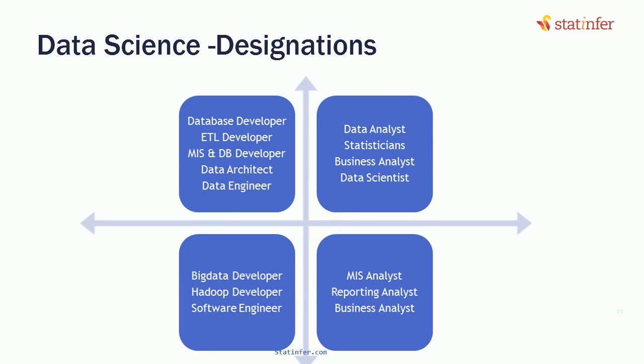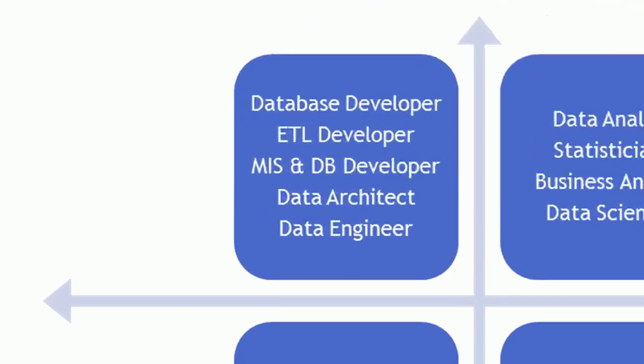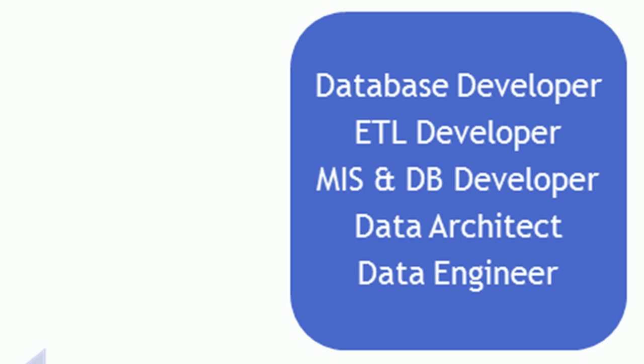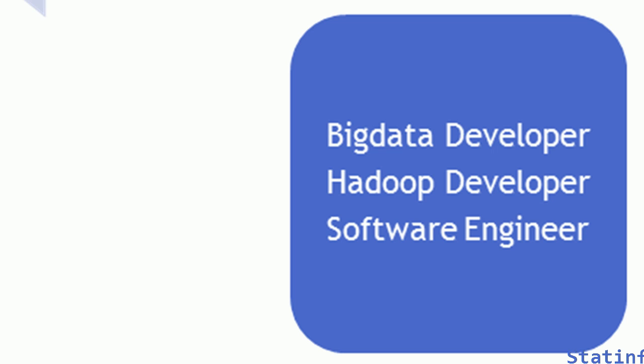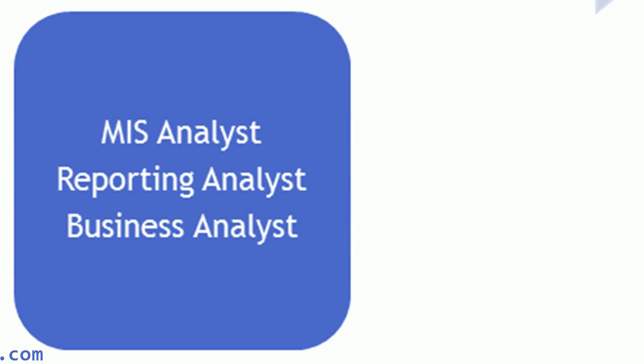Here are the designations for each of the quadrants. If you focus only on the tools from quadrant one, that would make you a database developer, ETL developer, MIS, DB developer, data architect, or data engineer. Tools from the second quadrant would make you a data analyst, statistician, business analyst, or data scientist. Focusing on big data could make you a big data developer, Hadoop developer, or software engineer. Focusing only on the last quadrant would make you an MIS analyst, reporting analyst, or business analyst.